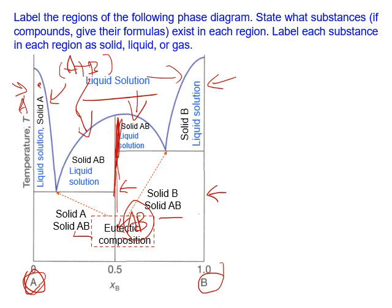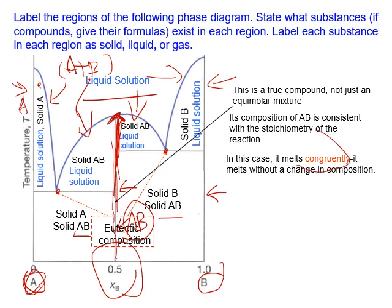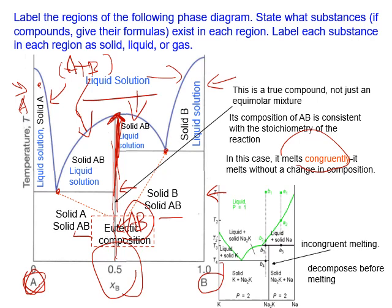Notice there are two eutectic compositions — the eutectic composition is the composition where the melting point is the lowest. In this diagram the product AB remains a stable solid until it melts. Before melting it's always a stable AB product; after melting it becomes the reactants A and B in liquid solution. This kind of diagram is called congruent melting. There's another type called incongruent, where before melting the product decomposes into solid B and a liquid, rather than directly melting.